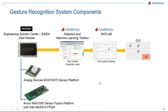The two main pieces of the Aero data module are an Analog Devices ADIS 16475 sensor platform, which features a precision miniature MEMS Inertial Measurement Unit that detects movement, and an Aero MAX1000 sensor fusion platform featuring an Intel MAX10 FPGA. This takes the raw data from movement and streams that to the host PC software.